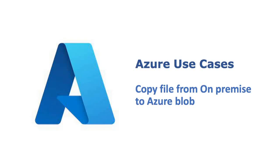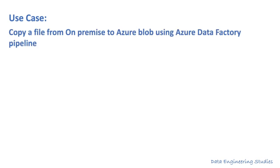Hello everyone. Welcome to Data Engineering Studies. In this Azure use cases playlist, we are going to see an interesting use case: copy a file from OnPrem to Azure Blob Storage using an Azure Data Factory pipeline. We are going to see the step by step implementation.